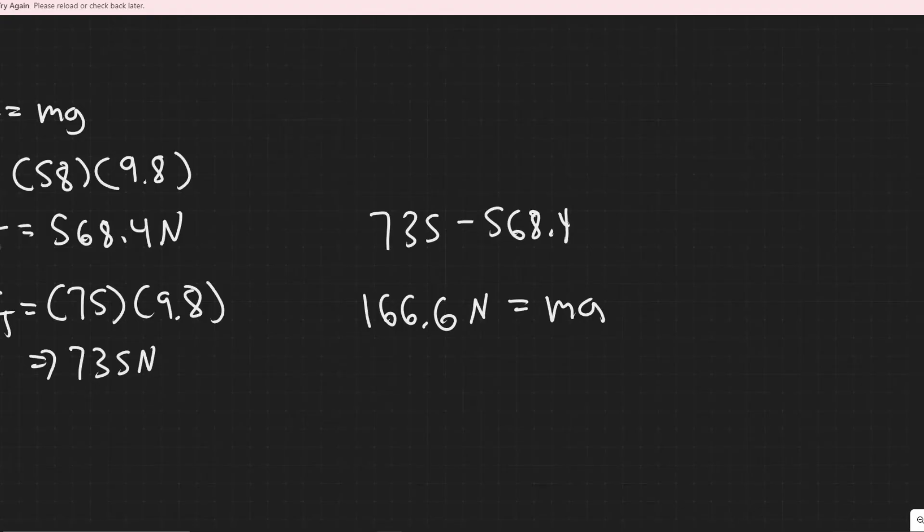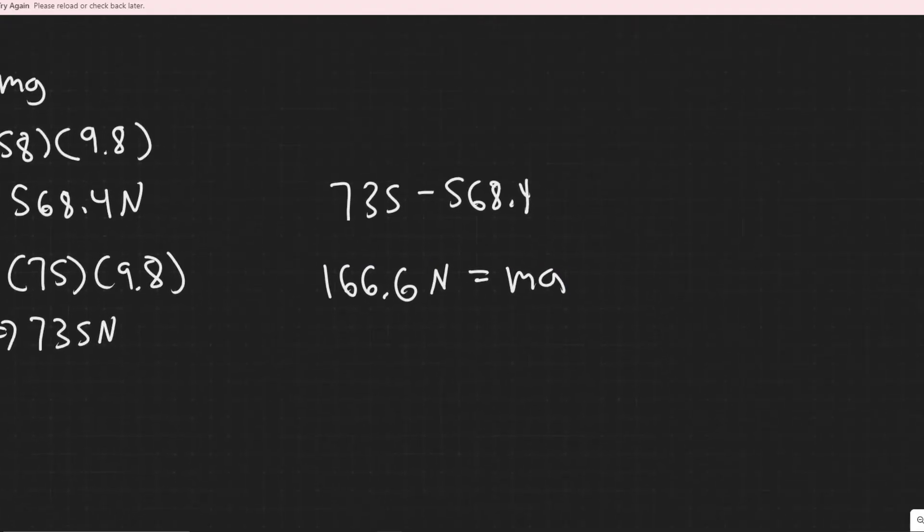And we know F equals MA, right? So the force equals its mass times acceleration, in this case, our person. So if we divide by the mass, which in this case is 75, you'll get the acceleration that he needs to go up. So the acceleration would be needed to be 2.2 meters per second squared.